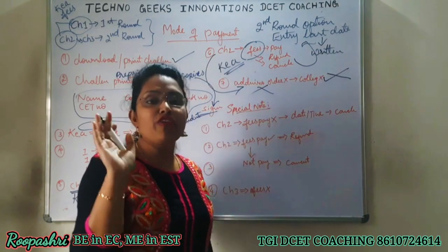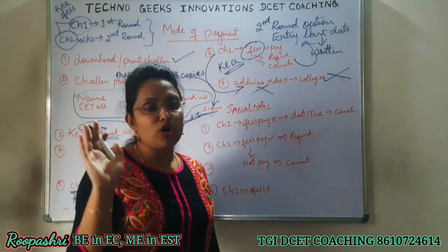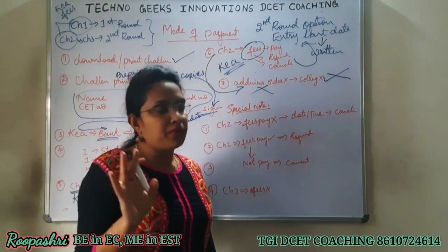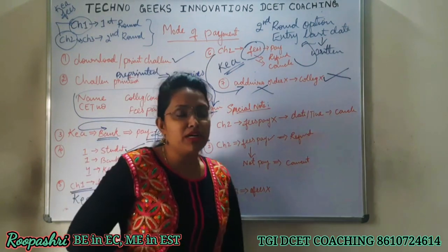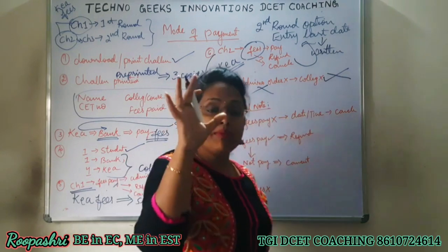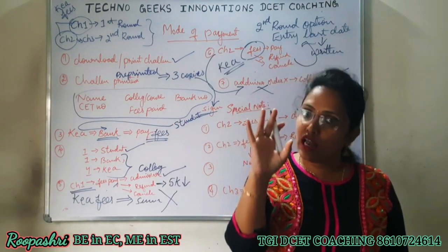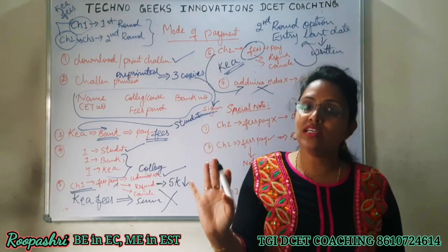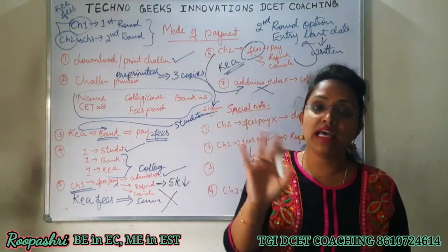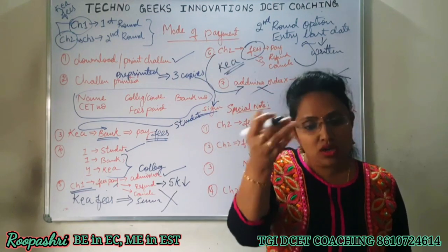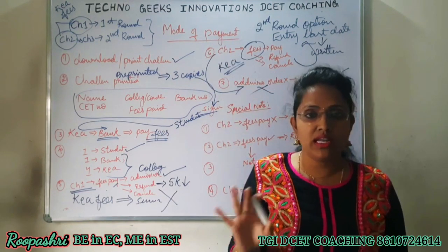So you have to wait for the second round result. For those who pressed choice 2, whatever college was allotted to you - you will only get that college or a better-ranked college. You won't get a worse college; only the same or better colleges will be available.